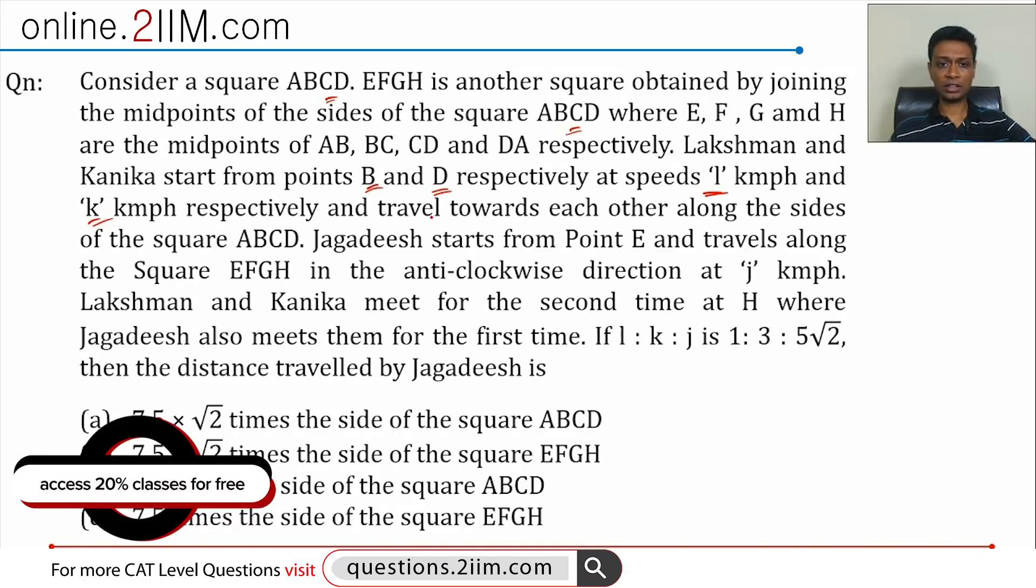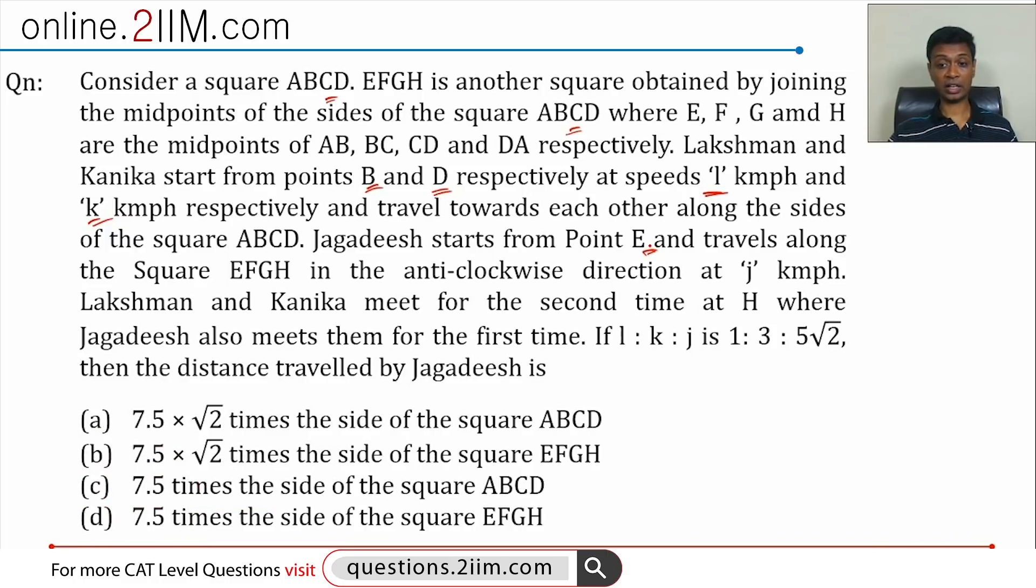Jagdish starts from point E and travels along the square EFGH, so he's traveling in the inner square in the anti-clockwise direction at J kilometers per hour. Lakshman and Kanika meet for the second time at H where Jagdish also meets them for the first time.